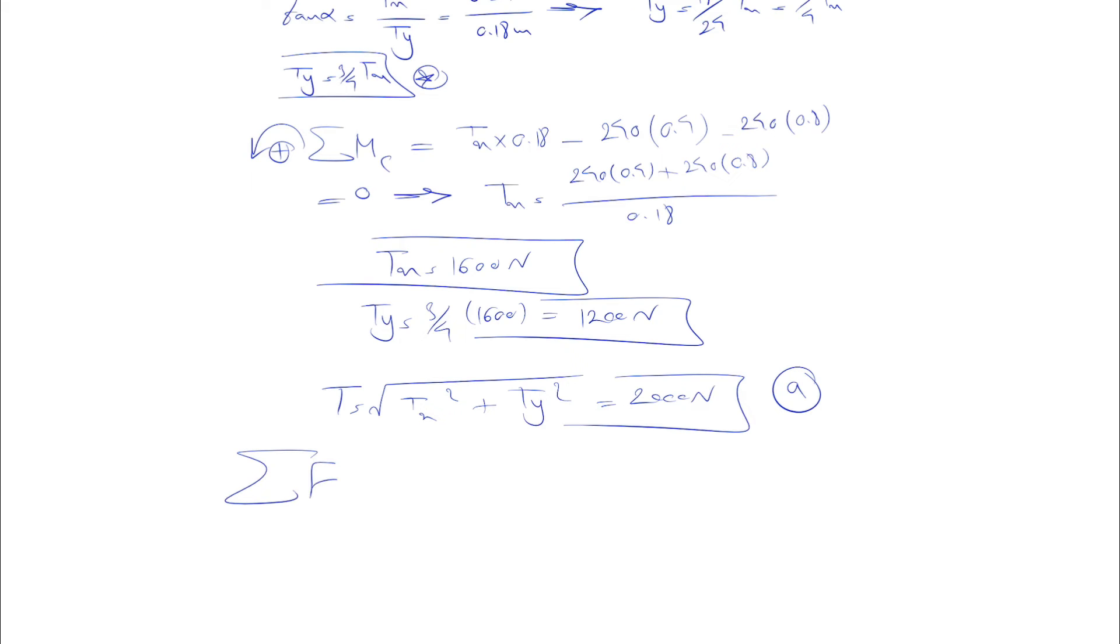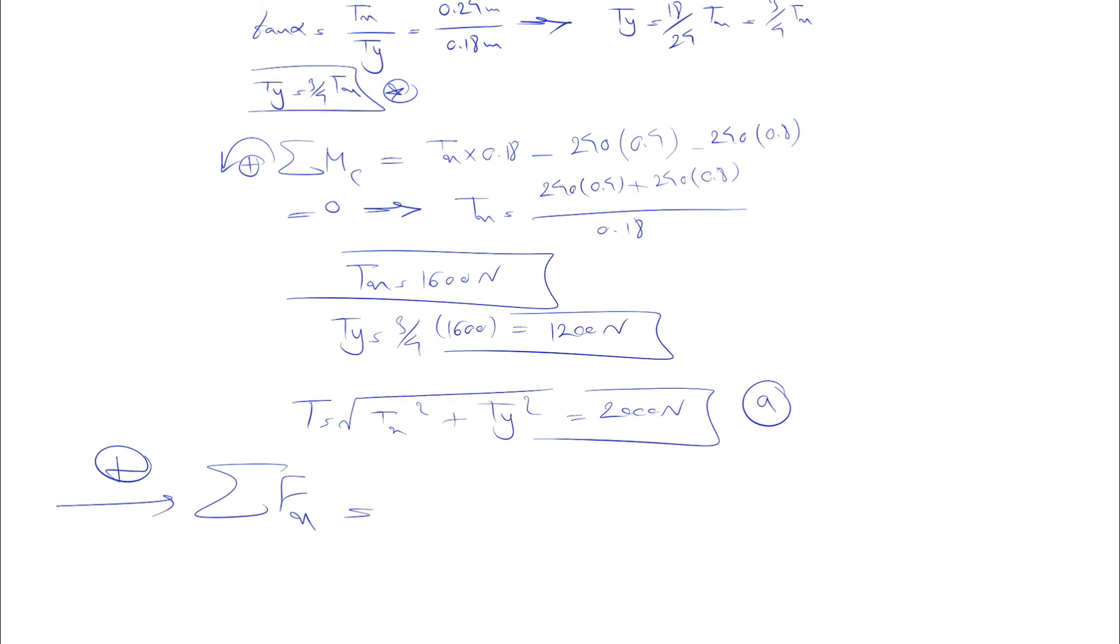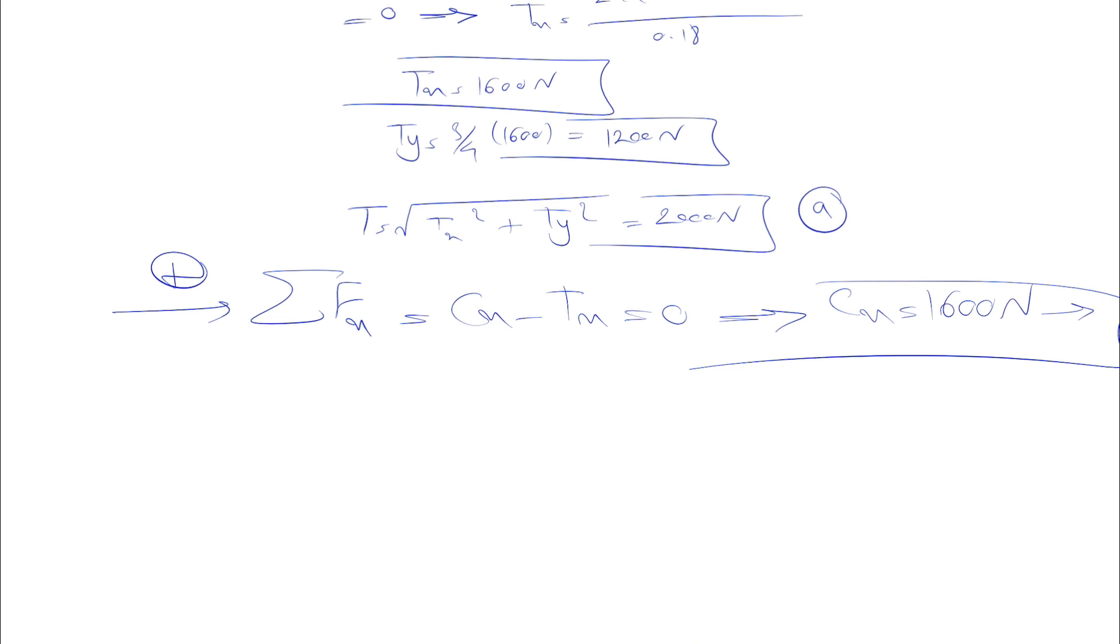We still haven't used our Fx and Fy equations. If we find those, we can find the unknowns that we have. Let's start with the Fx. This will be positive direction. If we look at the free body diagram, we'll see we have Cx in X direction and Tx, and that's all we have for X direction. So we'll have basically Cx minus Tx equals zero, and from here we can find Cx, which is 1600, and the direction will be to the right, which means the direction that we assumed there for Cx is correct.